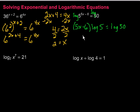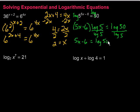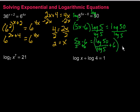Now we want to get that x by itself. Since it's out of the exponent, we can work with it. Start by dividing by the log of 5 on both sides. That leaves 5x minus 6 on one side, and log of 50 over log of 5 on the other. Then, add 6 to both sides, and divide by 5 to get x by itself.